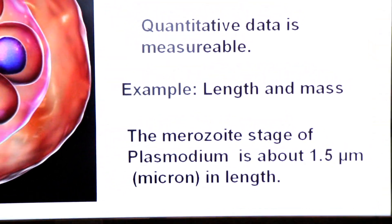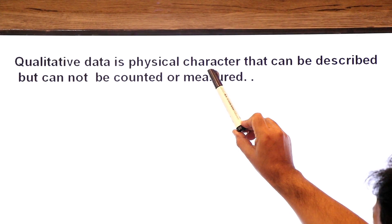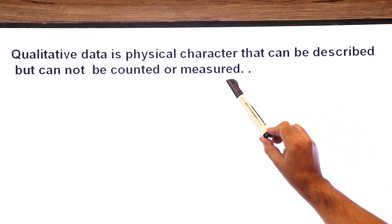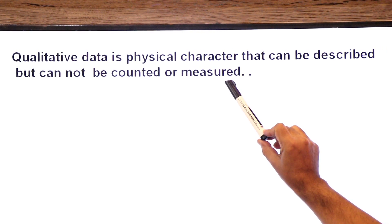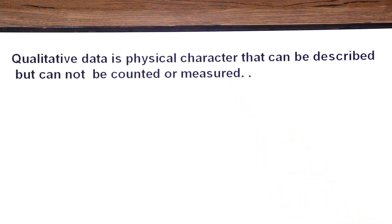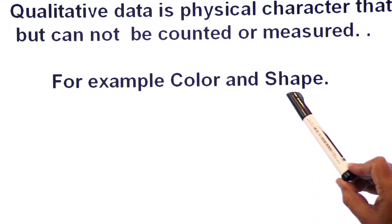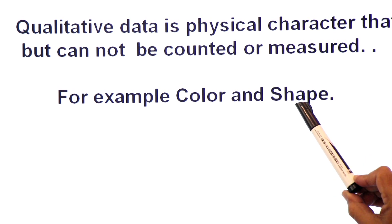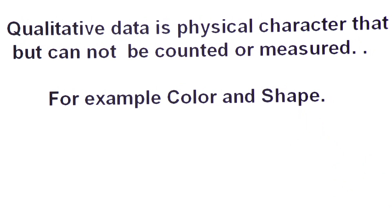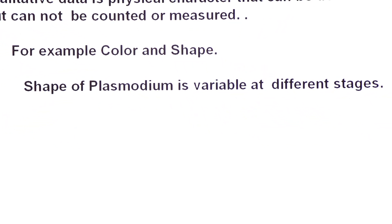Now we come to qualitative data. Qualitative data is a physical character that can be described but cannot be counted or measured — for example, color and shape. Color and shape can be described but cannot be expressed in numbers. For example, the shape of plasmodium is variable — it has eight different stages. Inside the red blood cell, plasmodium can have a ring shape, called the ring stage. It can also change its shape to become amoeba-like, called the amoeboid stage.